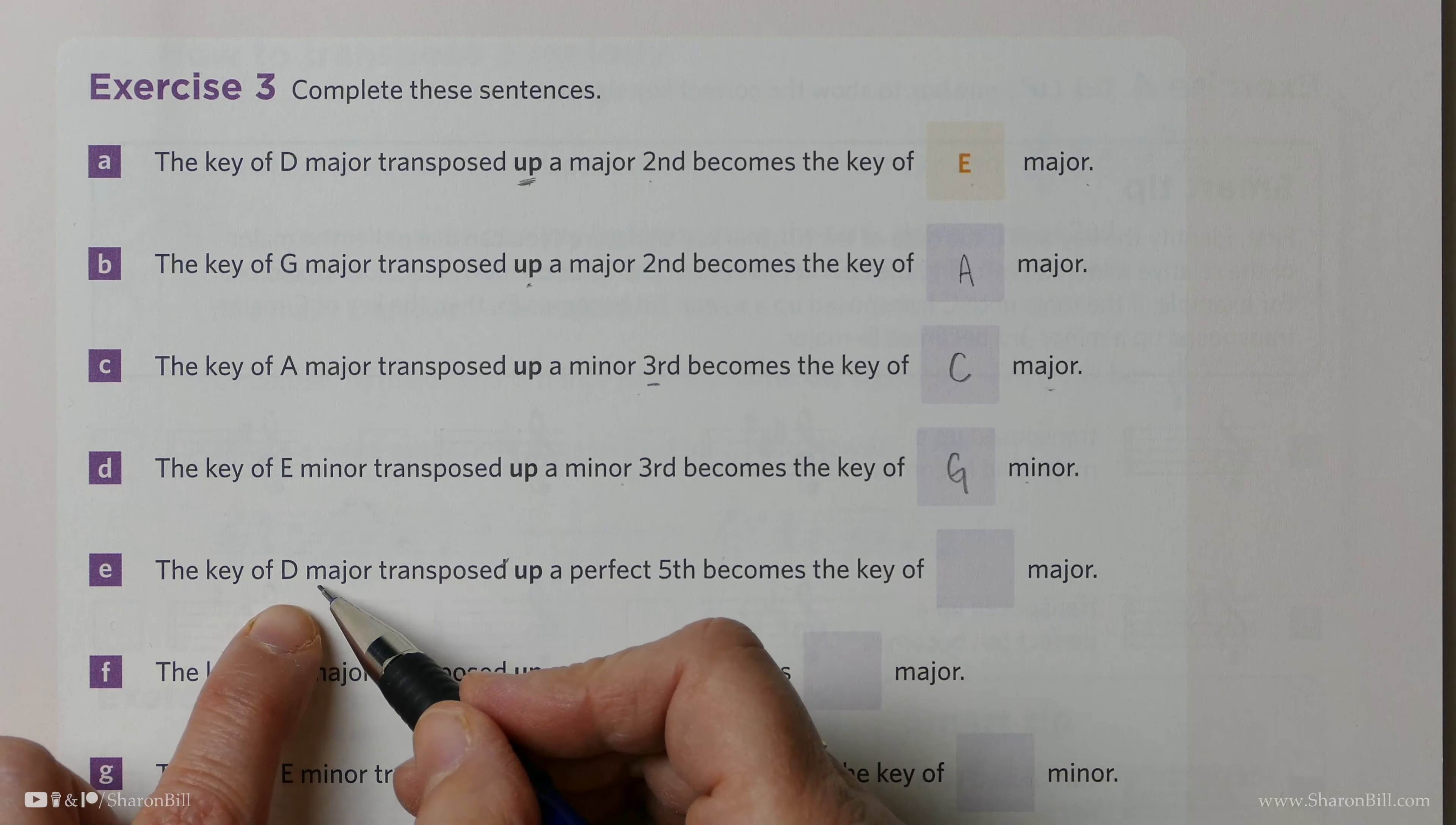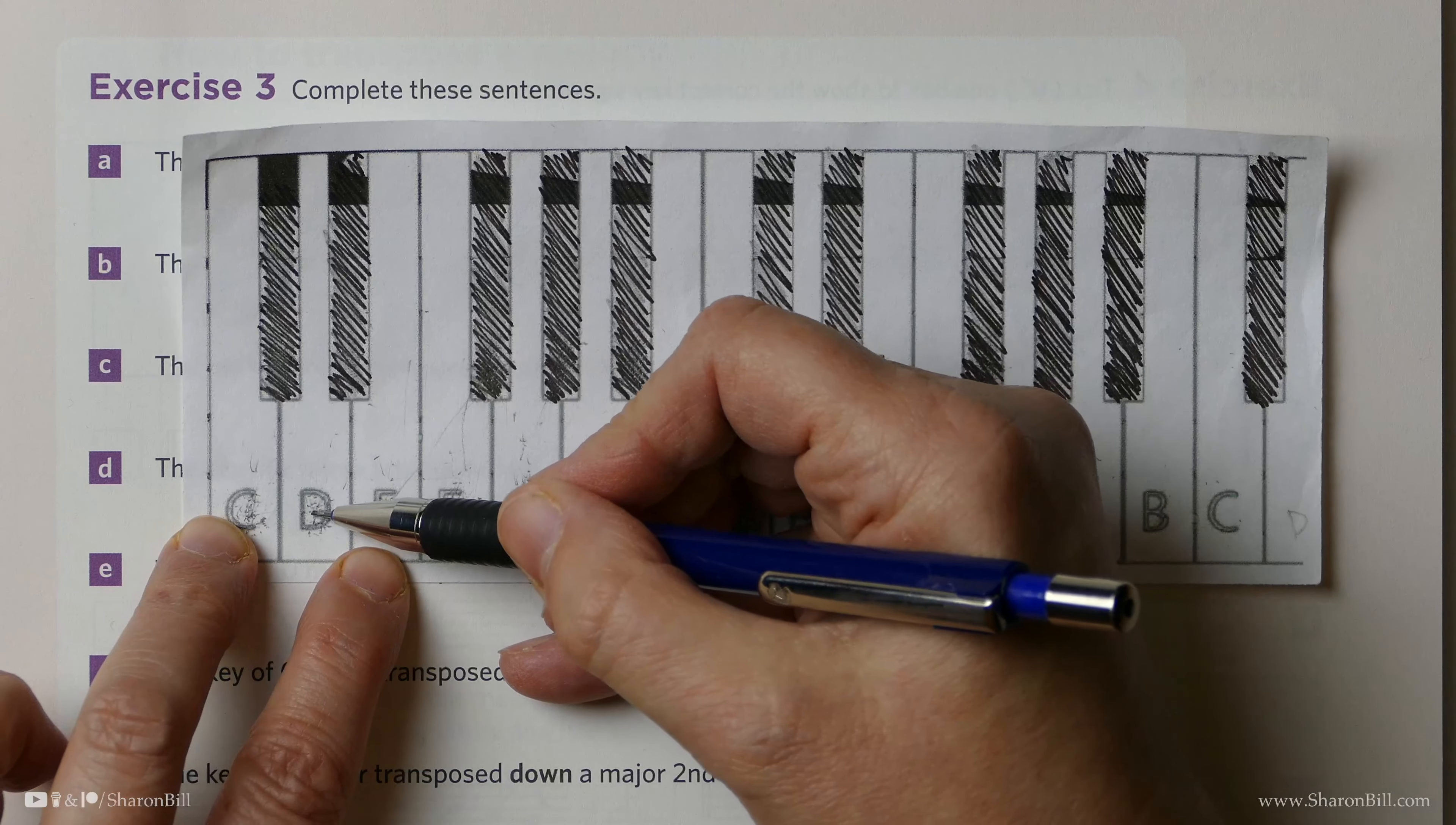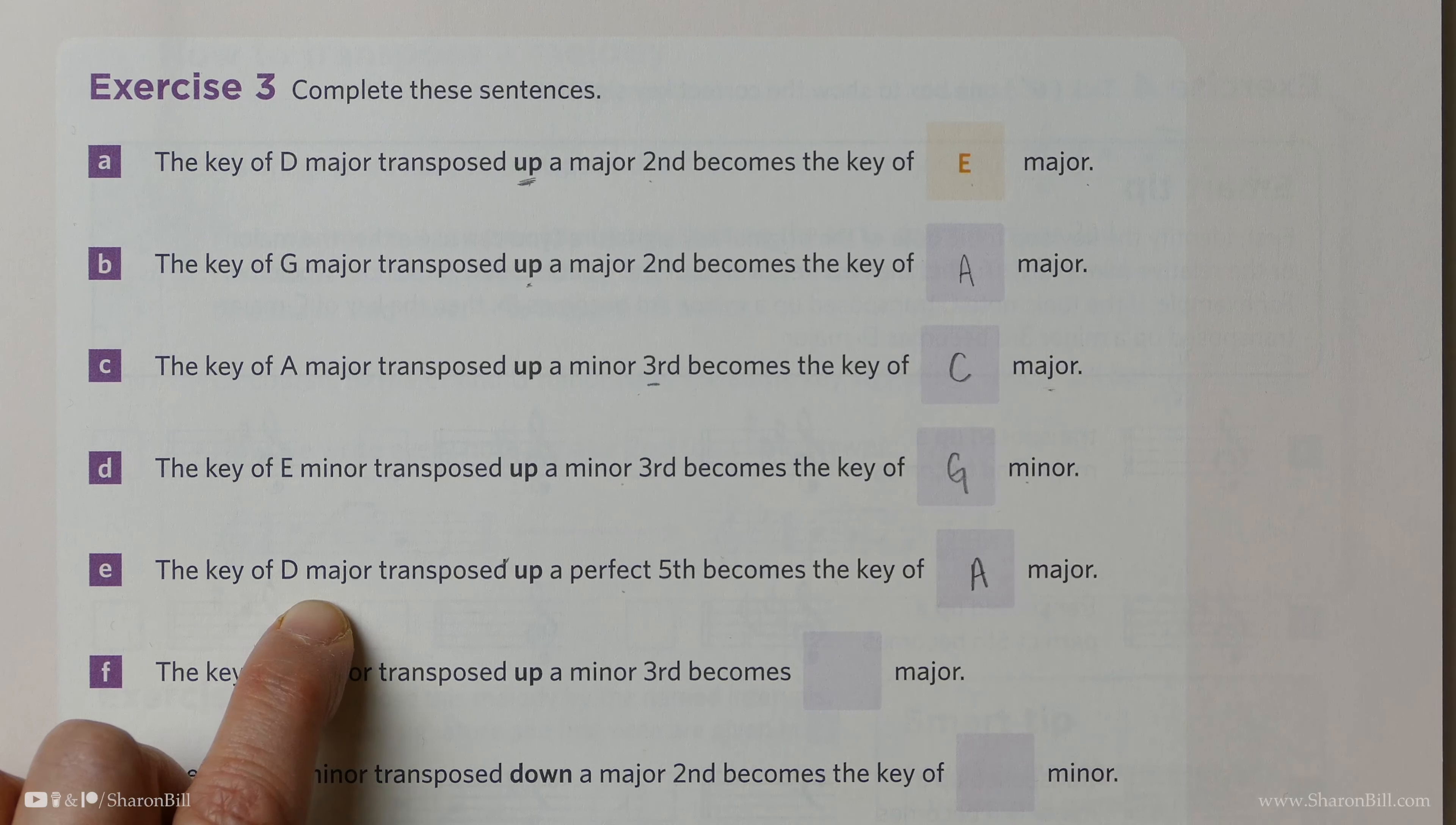Now we're in the key of D to begin with, and we need to transpose up a perfect 5th. So counting a perfect 5th from D, counting D as 1, 1, 2, 3, 4, 5, D to A is our perfect 5th. And so, up a perfect 5th from D major, takes us to A major.